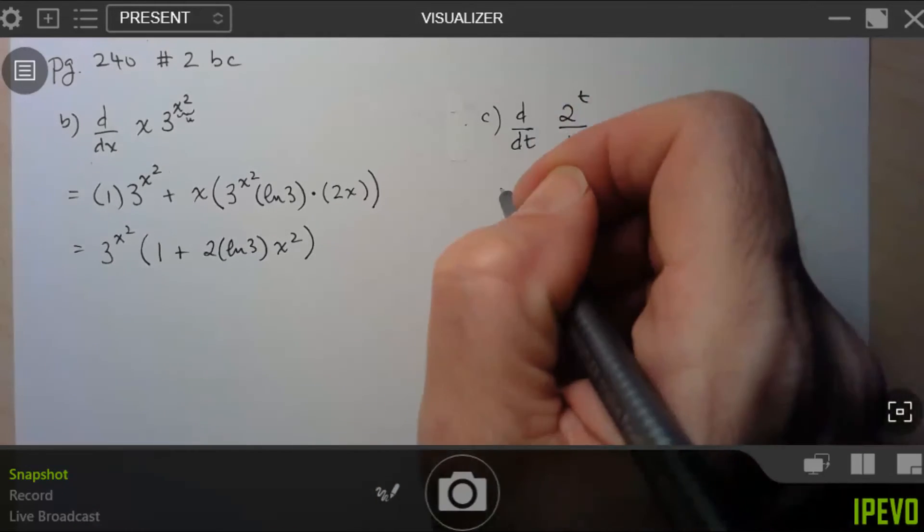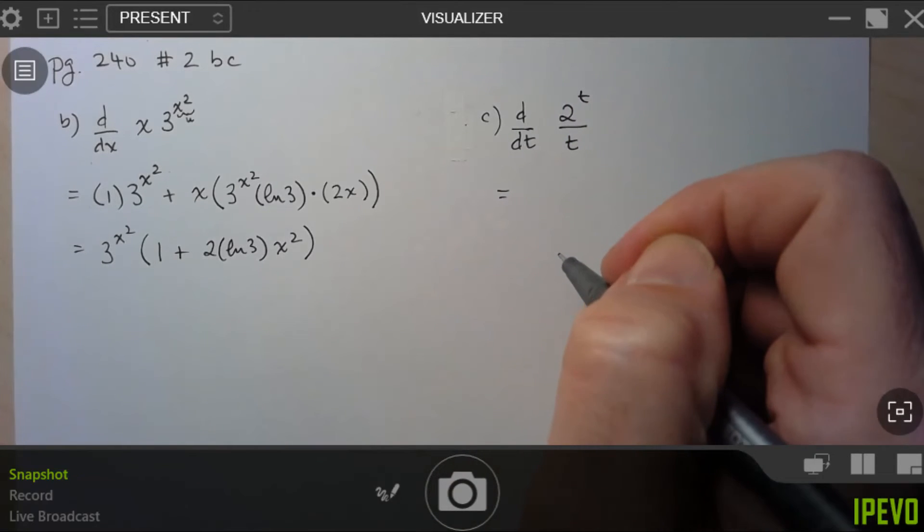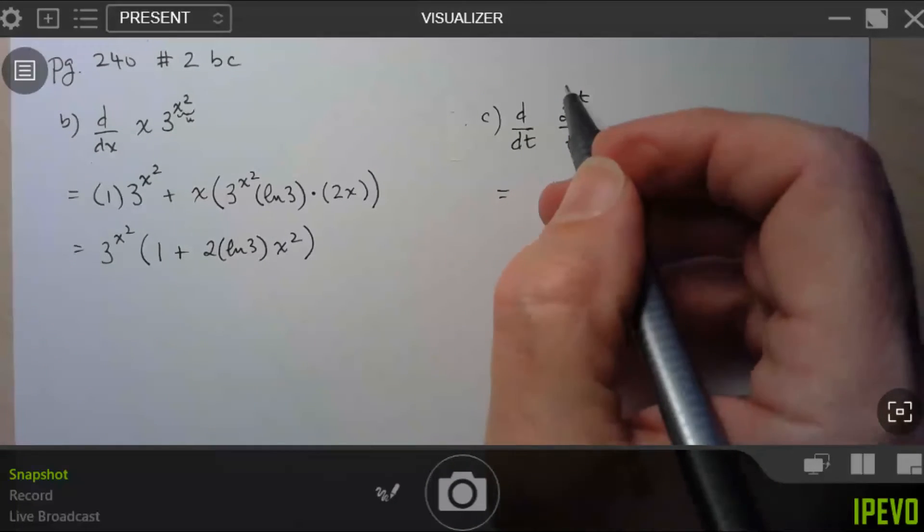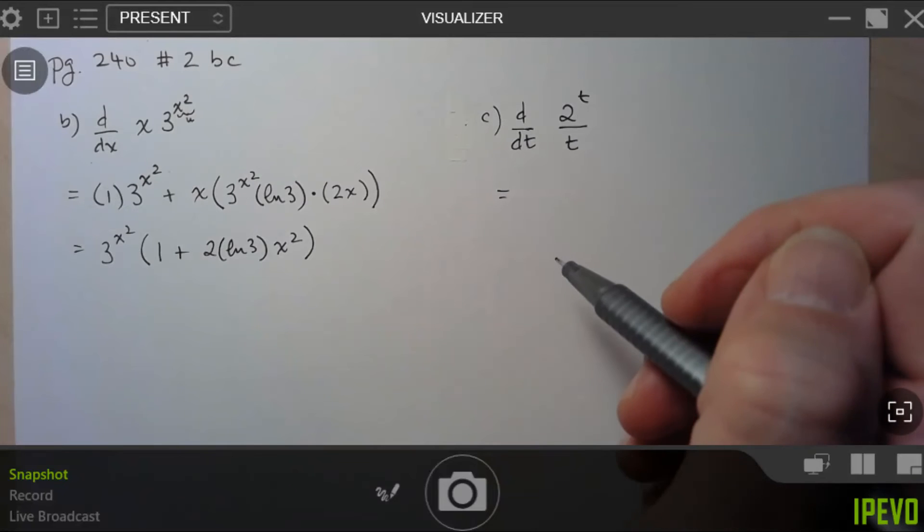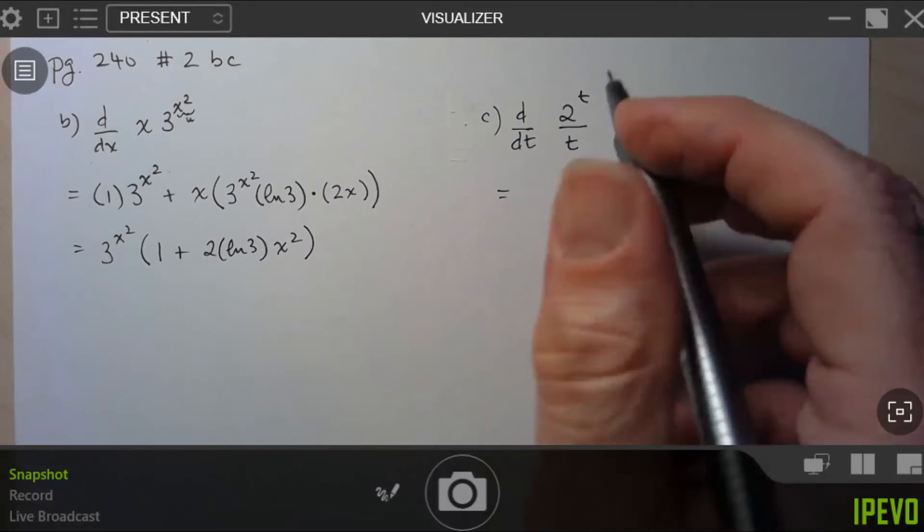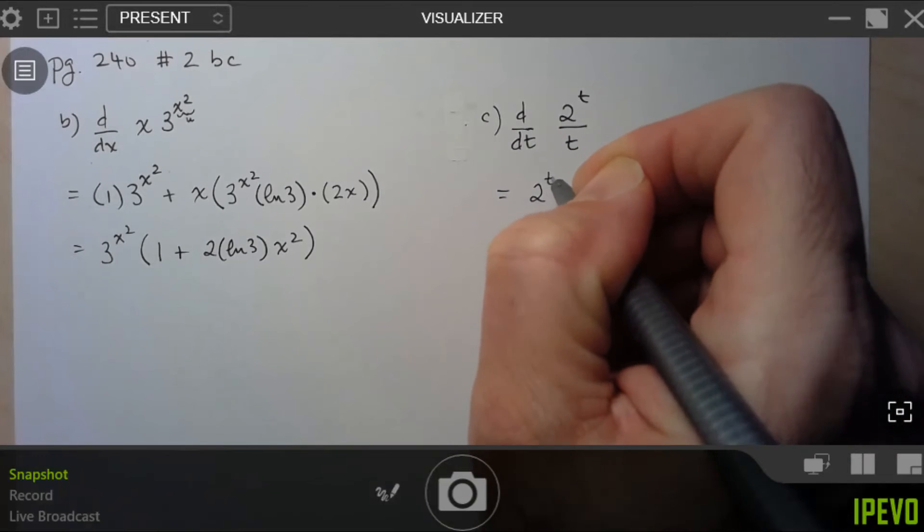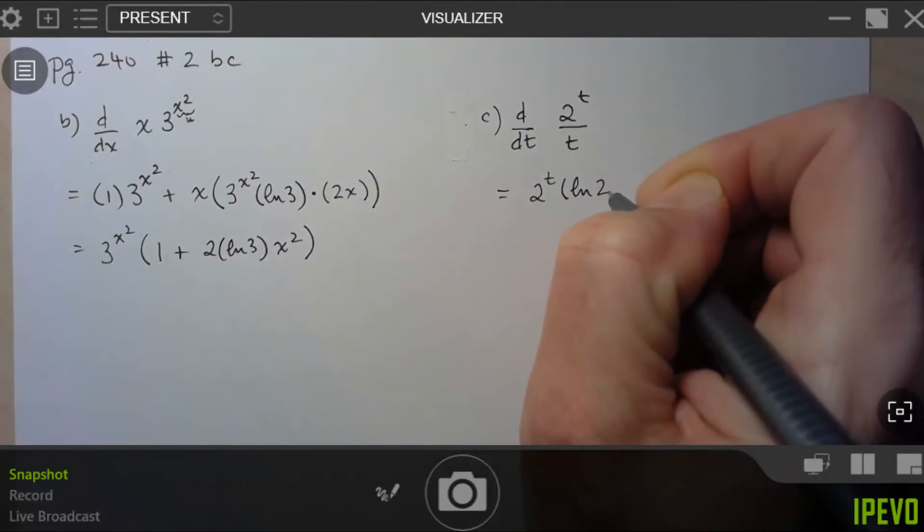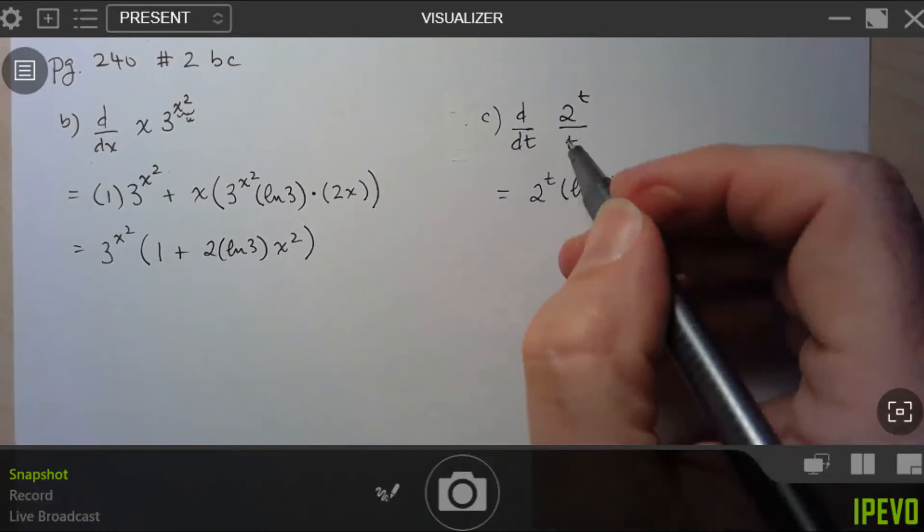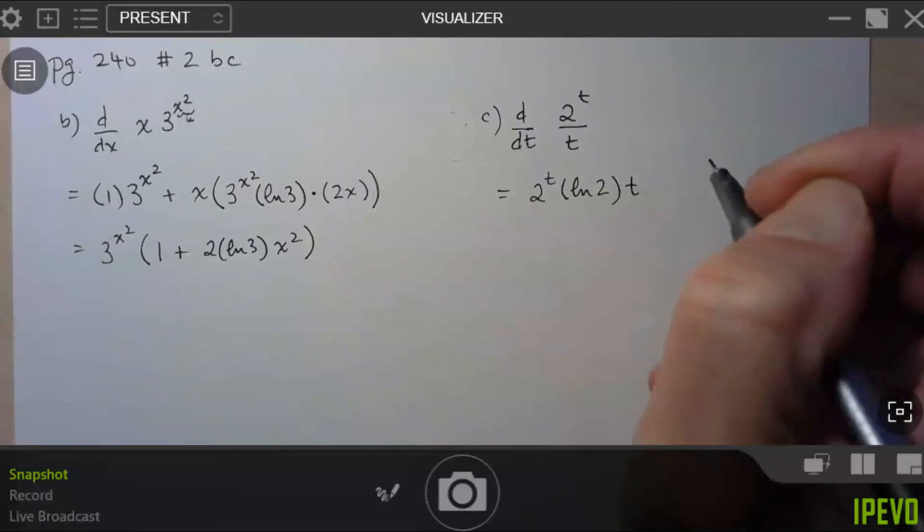All right, let's take a look at this one here. So we're going to have to use the quotient rule. But because we just have 2 to the t, we're not going to need to use the chain rule on this one here. So derivative of the numerator function is, again, just itself, 2 to the t times ln of the base, which is 2. Times the denominator function, which is just t...